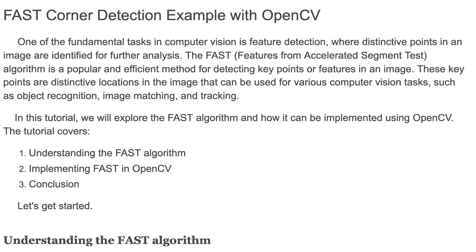Hello and welcome back to my channel. In this tutorial I'm going to talk about fast corner detection with OpenCV in Python. One of the fundamental tasks in computer vision is feature detection, where distinctive points in an image are identified for further analysis. The Features from Accelerated Segment Test algorithm is a popular and efficient method for detecting key points or features in an image.